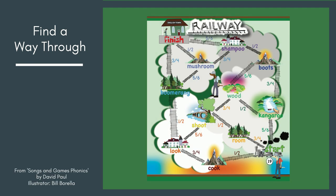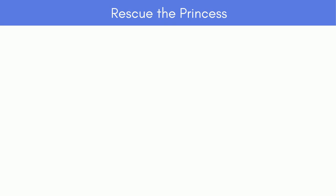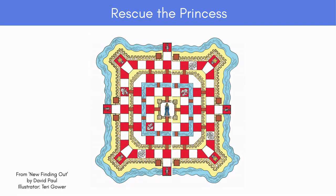There can be a simple board game with an attractive theme that children play throughout a lesson — for example, a find-a-way-through game where each child places a piece on start, throws a dice, and follows the direction indicated by the number to reach the finish. In a Rescue the Princess board game, the princess could be hidden in one of the rooms in a castle, and the children have to find which room she is in. Alternatively, they know where she is and either try to be the first team to reach her, or one team tries to reach her while the other tries to block them.